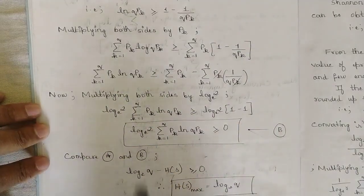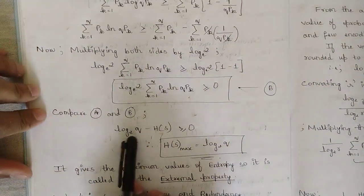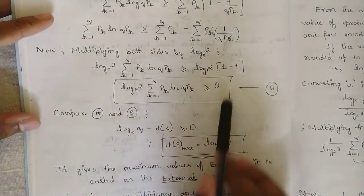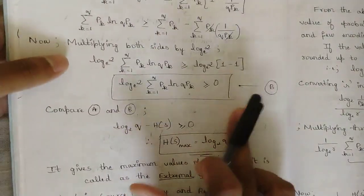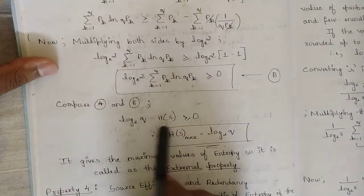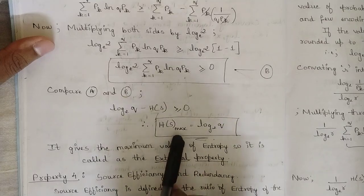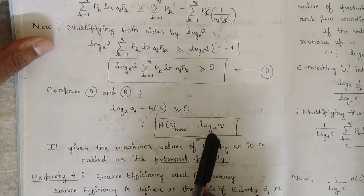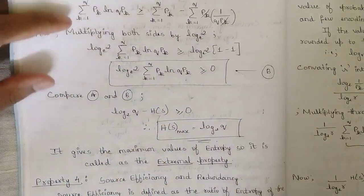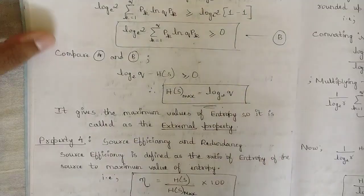Comparing equation A and equation B, since equation B was derived from equation A, we can directly conclude: log Q base 2 minus H(S) ≥ 0, which means H(S) ≤ log Q base 2. Therefore, H of S max is equal to log Q base 2. This is the extremal property — it gives the maximum value of entropy, achieved when symbols are equi-probable.